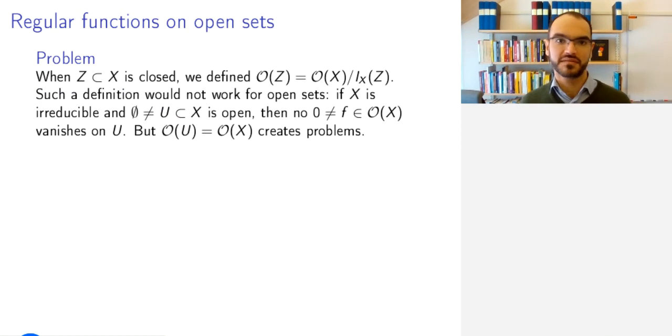So let's take an open set U and try to define it in the same way. So we would say that O(U) is the quotient in this manner. But then we have to understand which functions vanish on an open set. And the problem is that if X is irreducible, which you have seen it often is, and if you take a non-empty open subset, then there is no function, no regular function on X, that vanishes on all of U.